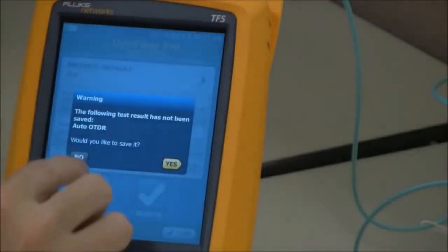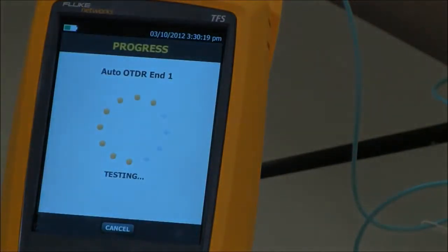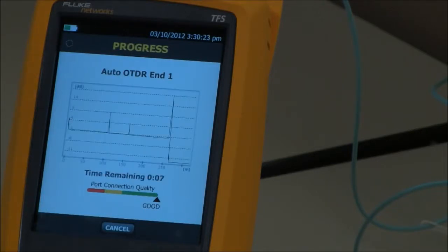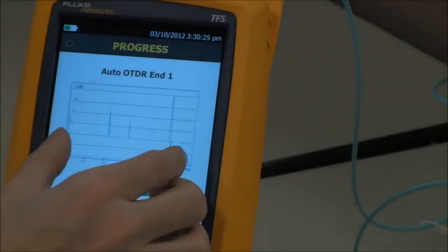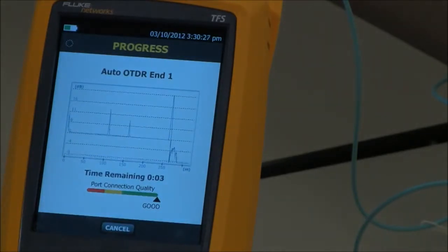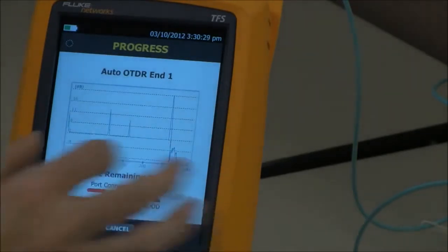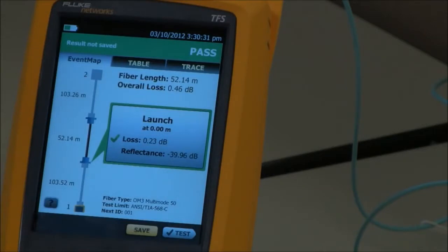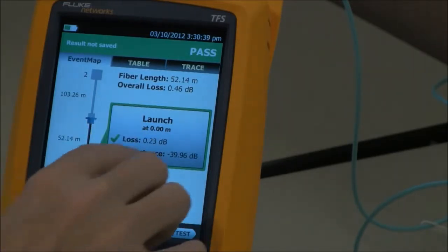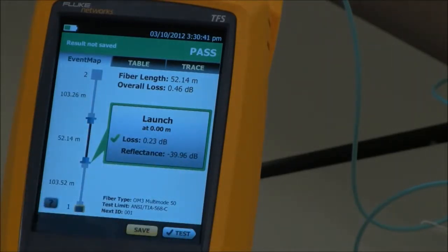We'll run a test. I'm not going to save the last one. And this is in Auto OTDR mode. So the OptiFiber Pro has selected the best range, the best pulse widths, and the most suitable averaging time to give me the most accurate result in the shortest time possible. And here we see 0.23 dB and a reflectance of roughly minus 40 dB.